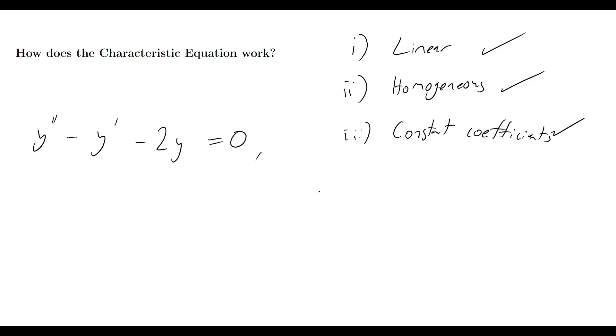Okay, so what that then implies for us further is that y, the unknown function, has derivatives that are simply multiples of itself. And now there's only one function that realistically works in that regard, and we know that to be the exponential function.